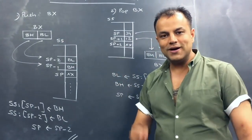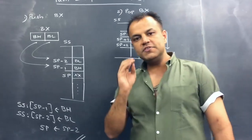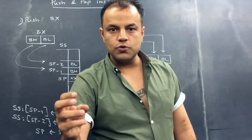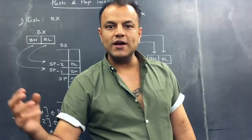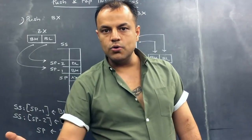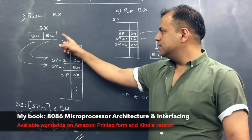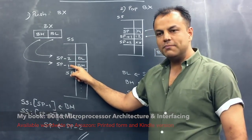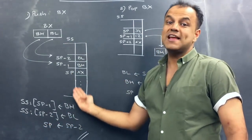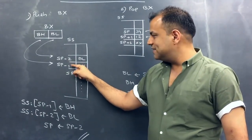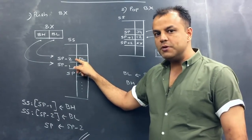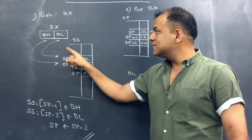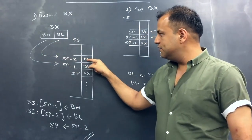You don't need to memorize — just follow this basic rule: the lower byte is always stored at the lower address, and the higher byte is always stored at the higher address. The stack grows backwards, so if the current top is SP, the next locations are SP minus 1 and SP minus 2. SP minus 2 is the smaller (lower) address, so the lower byte BL goes to SP minus 2 and the higher byte BH goes to SP minus 1.